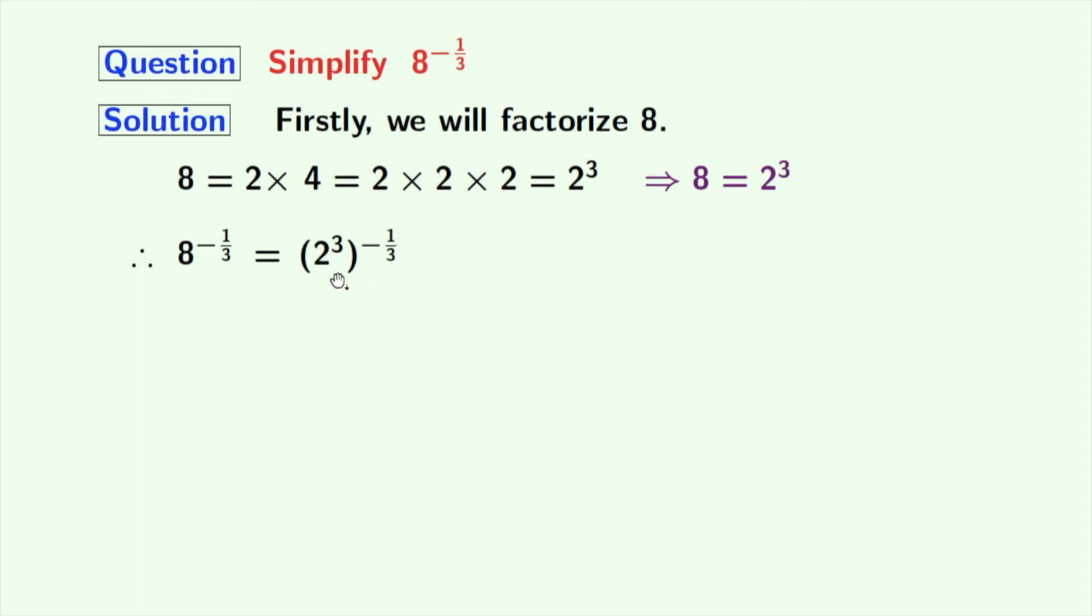Now we will express this as 2 power 3 times minus 1 by 3, using the rule of a power m whole power n is equal to a power m times n. Here a is 2, m is 3, and n is minus 1 by 3.